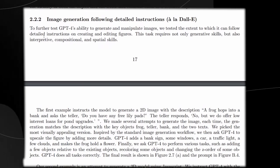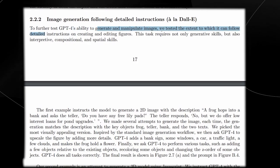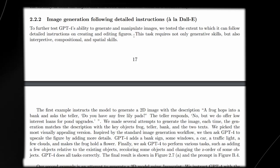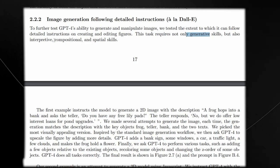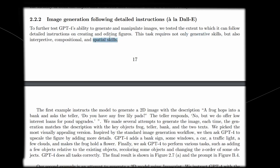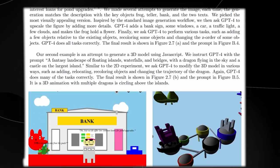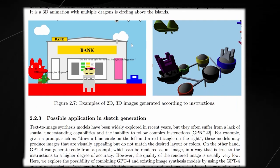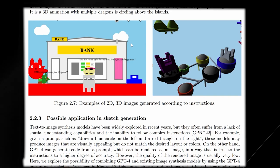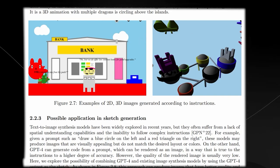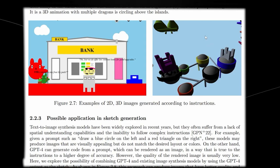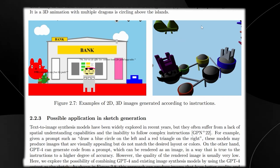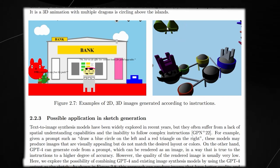These second examples are really cool because they're not just SVGs, they're actually 3D. To further test GPT-4's ability to generate and manipulate images, we tested the extent to which it can follow detailed instructions on creating and editing figures. This task not only requires generative skills, but also interpretive, compositional, and spatial skills, like your ability to think and move in 3D space. These are the two examples of what GPT-4 was able to create. I honestly think that for an early version of this software, this is truly insane. The key point here is that this is a large language model that is able to do this.